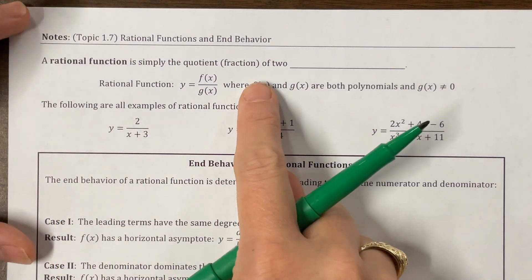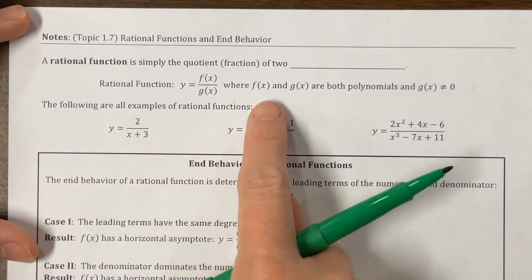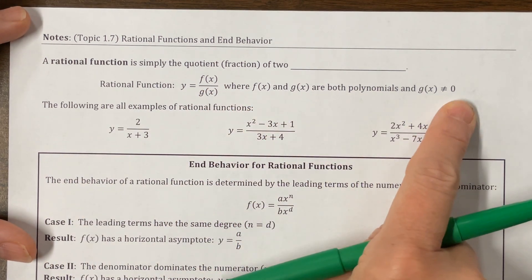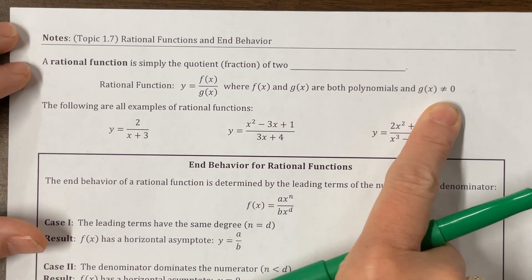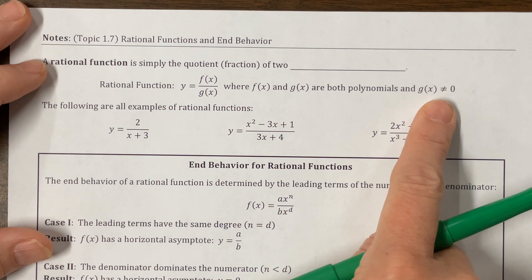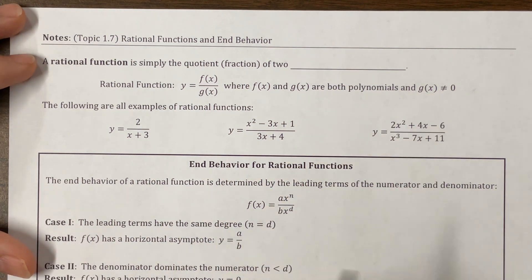A rational function is simply the quotient fraction of two polynomials. Rational function f(x) over g(x), where f(x) and g(x) are both polynomials, and g(x) can't equal zero. Keep in mind my favorite math joke of all times is that Chuck Norris can divide by zero. You are not Chuck Norris, so you cannot divide by zero.